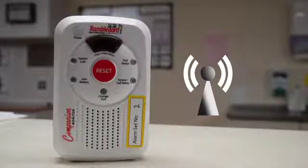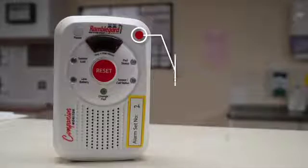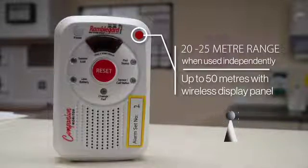It has the ability to transmit to a pager to increase range when the companion is used as a room monitor without the wireless display panel. It also has a 20 to 25 meter wireless range when used independently and up to 50 meters when used with the wireless display panel.